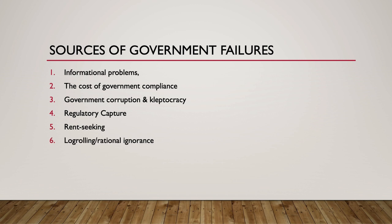The sixth source is log-rolling combined with rational ignorance. Log-rolling is the process by which a legislator votes to approve one bill in exchange for favorable votes from other legislators on other bills. When voters are rationally ignorant — that is, they have a tendency to remain uninformed on matters of public policy due to the high costs and low benefits of staying informed — log-rolling can result in policies that benefit the few at the expense of the many.